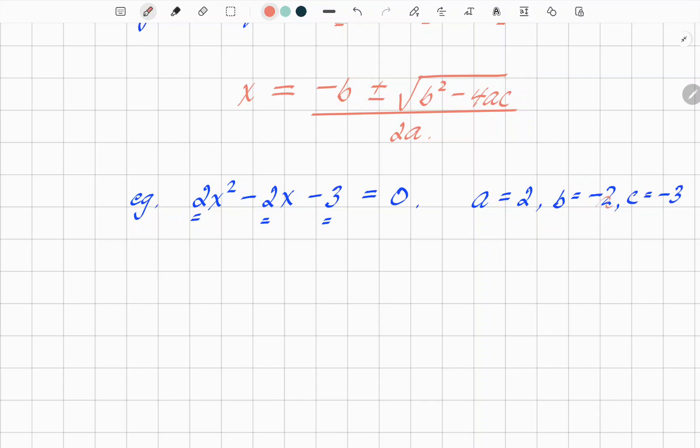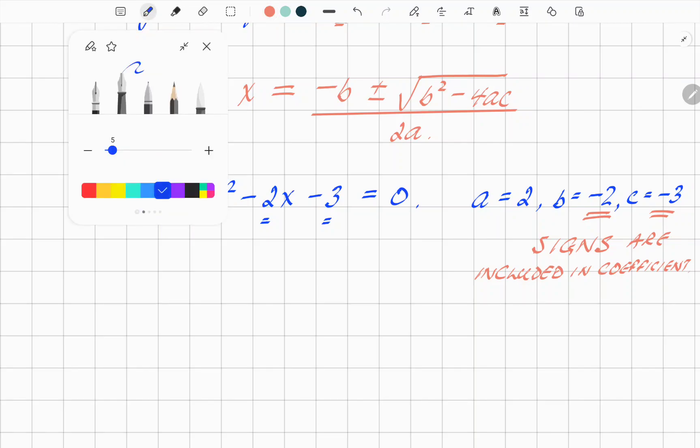So you've got to watch out for the signs. b is minus 2. It's not just the number, it's the sign as well. So do be careful about that. Don't forget to include that.